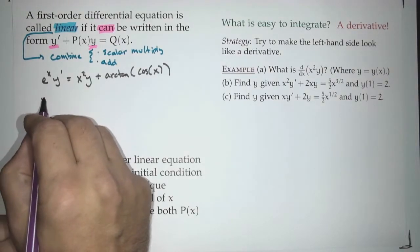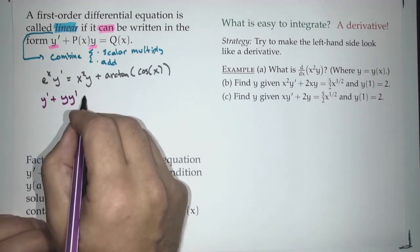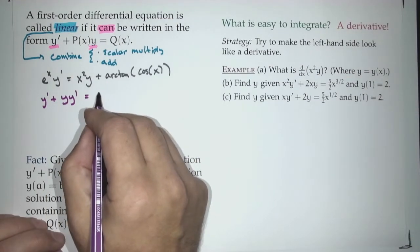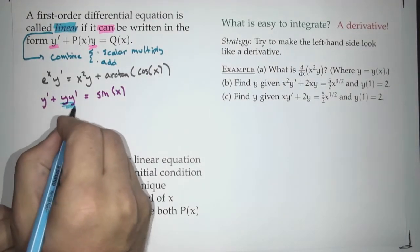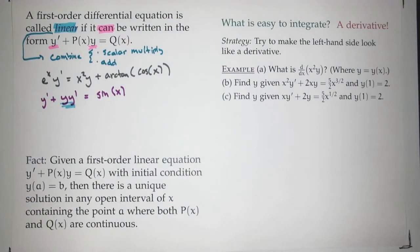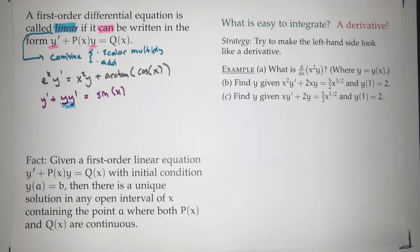How about y' + y·y' = sin(x)? Is that linear? No, not linear. The problem is that the y·y' term breaks it. Could we solve it? Yes, we can — it's still separable. So separable and linear are different concepts. Something can be separable but not linear. Something can be linear but not separable. So be careful.